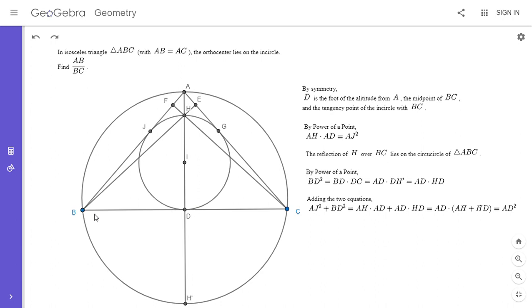So we have AJ squared plus BD squared is equal to AD squared. And now I'm going to take advantage of the Pythagorean theorem because it looks like if we combine it with the Pythagorean theorem on triangle ABD, it looks like that might give us something useful. So AD squared, that's AB squared minus BD squared using the Pythagorean theorem. So we have AJ squared plus BD squared is equal to AB squared minus BD squared.